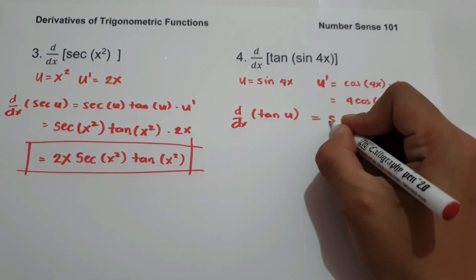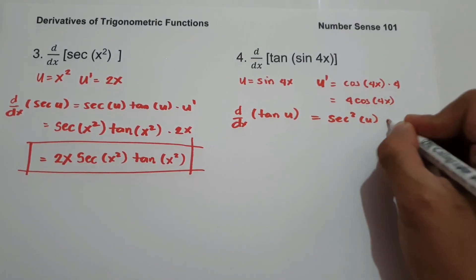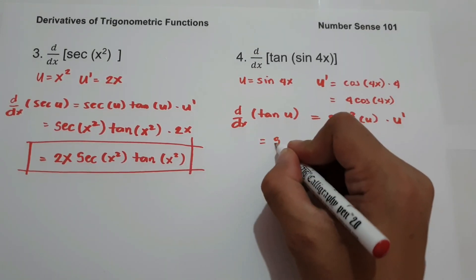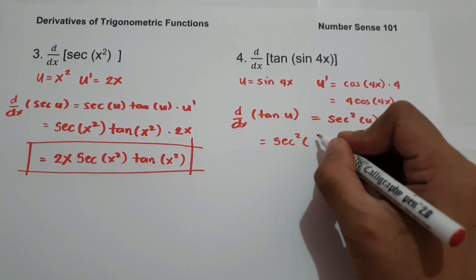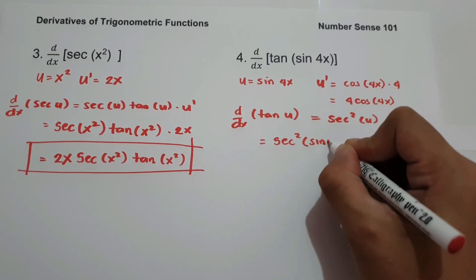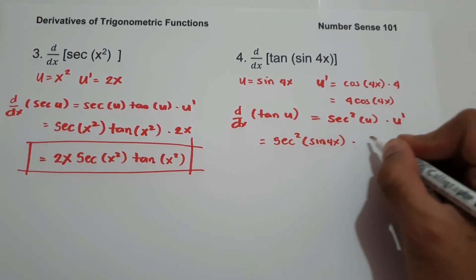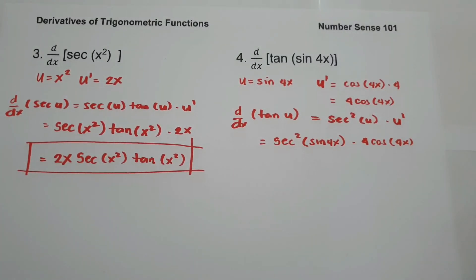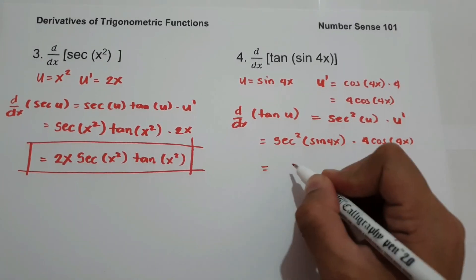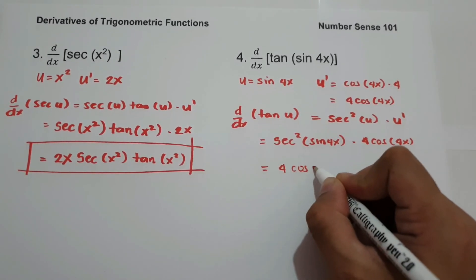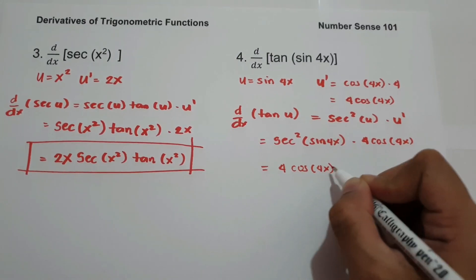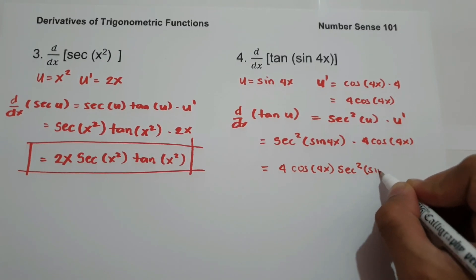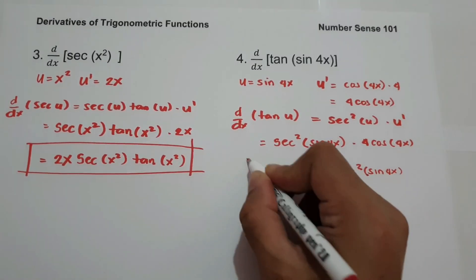The derivative of tan(u) is sec²(u) multiplied by u'. So we have sec²(sin(4x)) multiplied by u', which is 4cos(4x). Simplifying, our final answer is 4cos(4x) · sec²(sin(4x)).